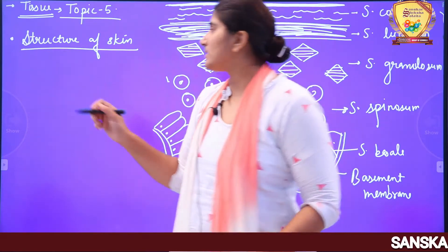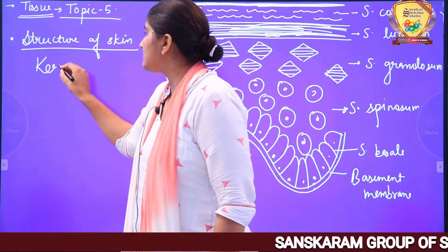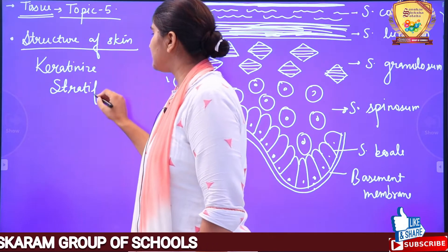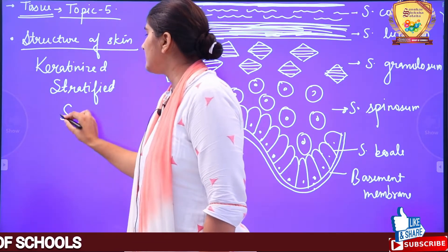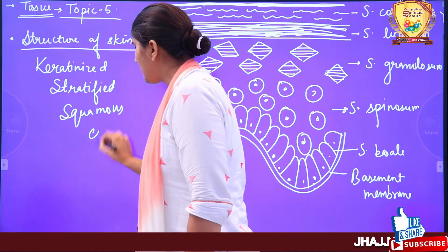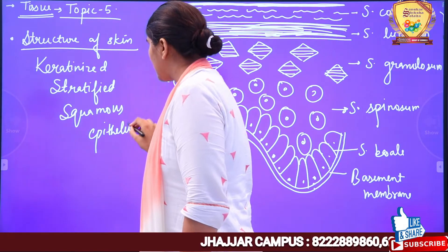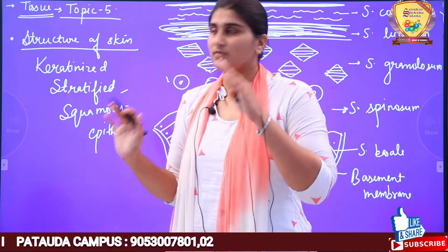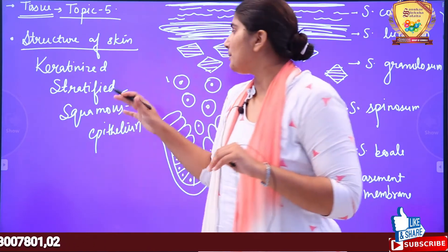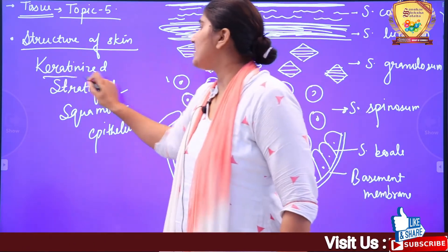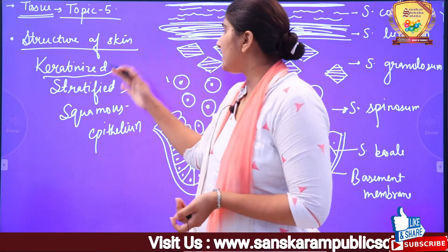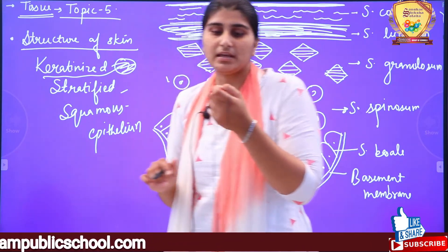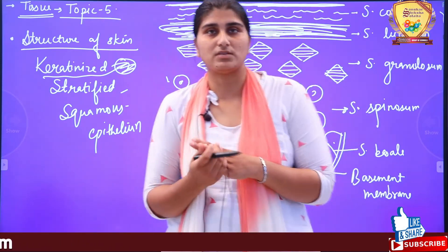So we are looking at the structure of skin, which is a special type of epithelial tissue — specifically, keratinized stratified squamous epithelial. Every word has its own meaning. It has squamous cells — flat, disc-like cells arranged in multiple layers. The new word introduced here is 'keratinized', which means keratin is present inside the cells. These cells are filled with keratin. Keratin is a special protein present in our hair, skin, and nails.